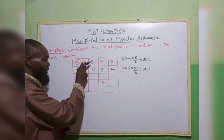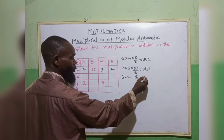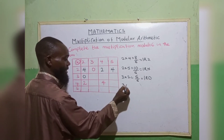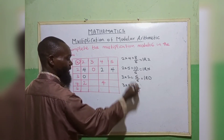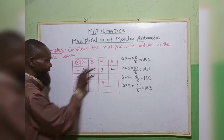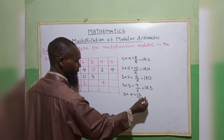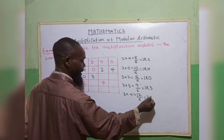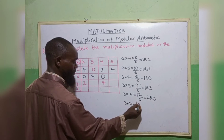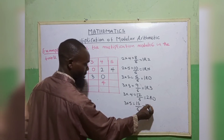Continuing: 3 times 2 gives 6 — 6 divided by 6 gives 1, remainder 0. 3 times 3 gives 9 — 6 goes into 9 once, remainder 3. 3 times 4 gives 12 — 6 goes into 12 twice, remainder 0. 3 times 5 gives 15 — 6 goes into 15 twice (6 times 2 is 12), remainder 3. So row 3 gives: 0, 3, 0, 3.